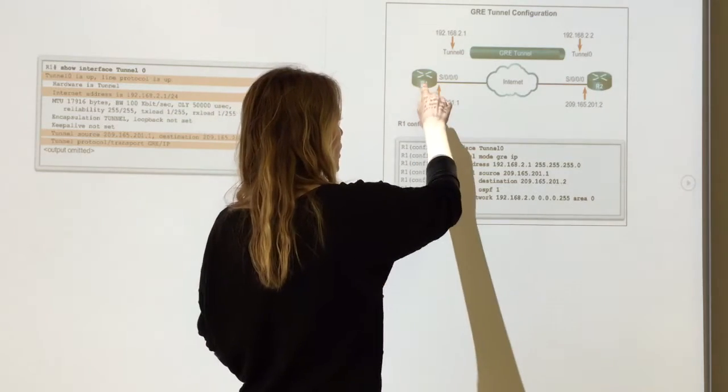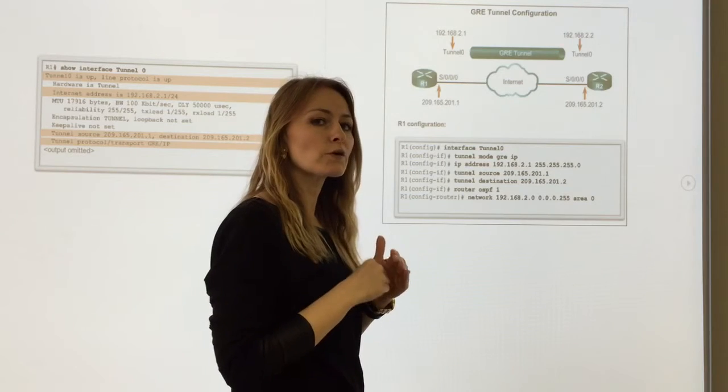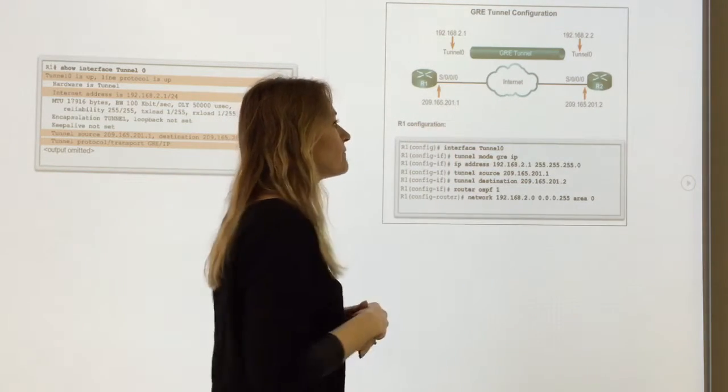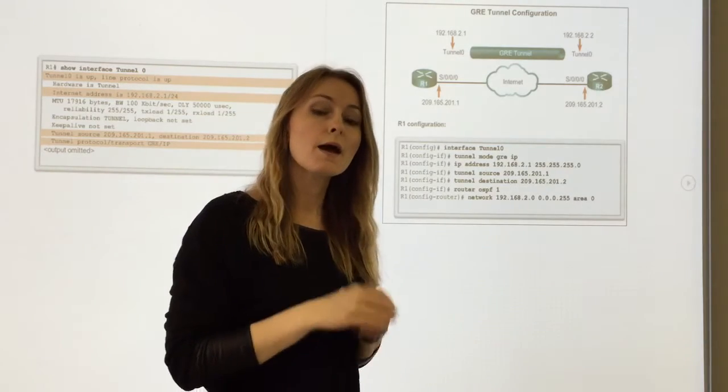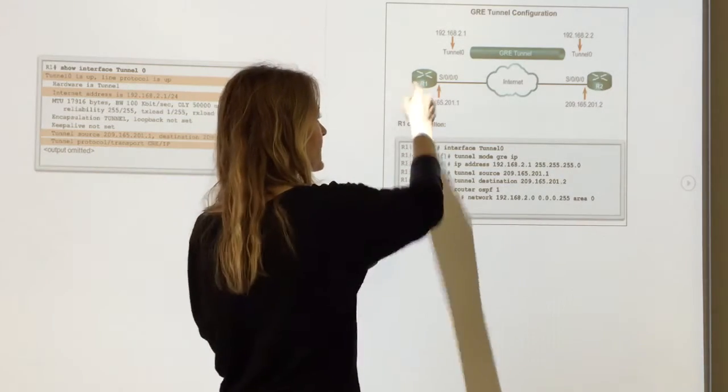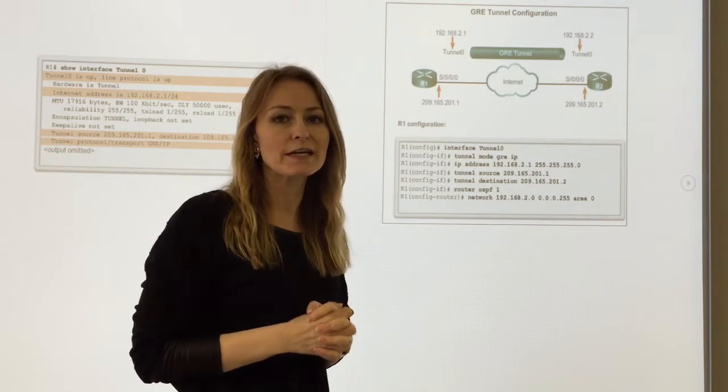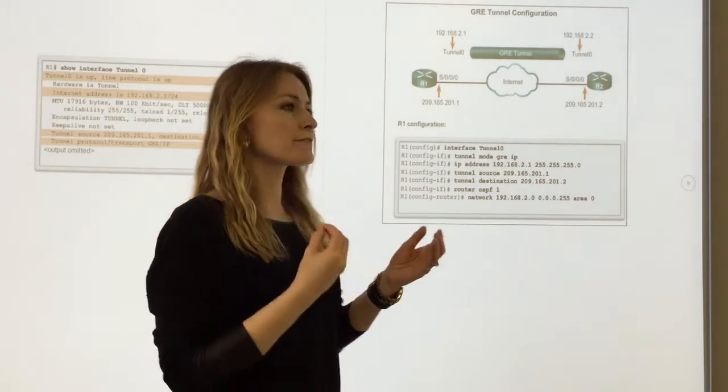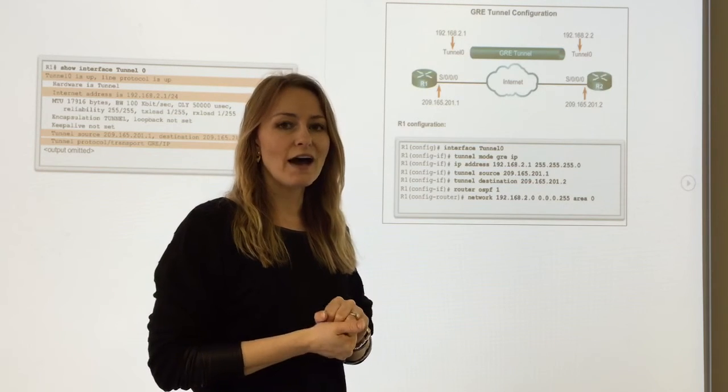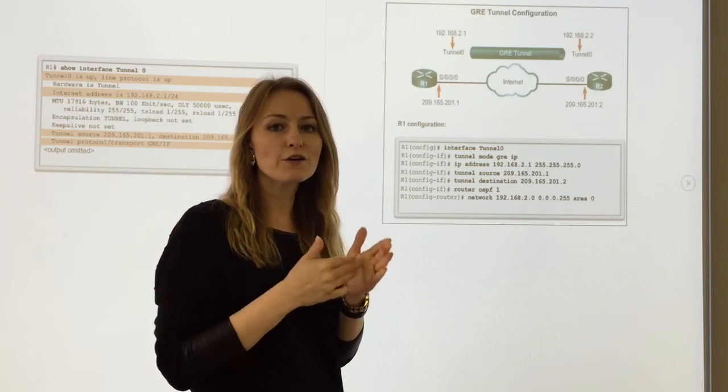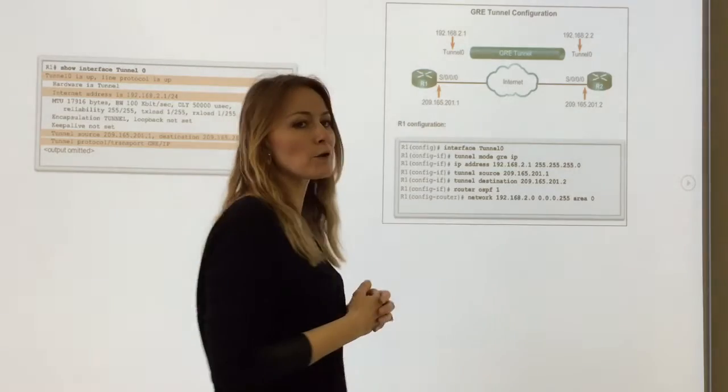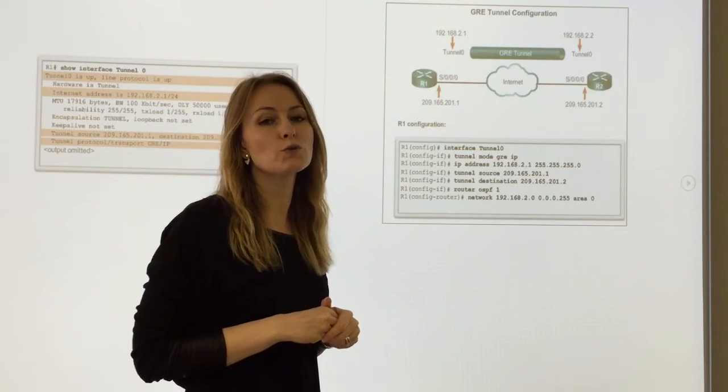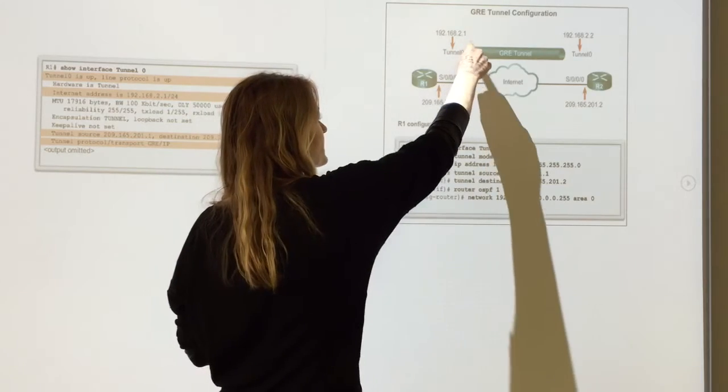Router R1's actual interface IP address is 209.165.201.1. But from the perspective of R1, because we've created a GRE tunnel, we give the illusion that the IP interface is actually 192.168.2.1, which is really the beginning of the tunnel.